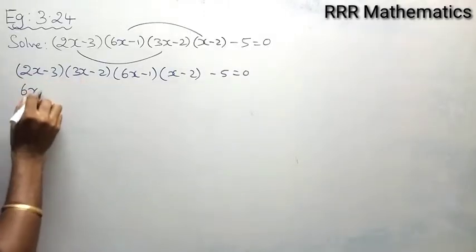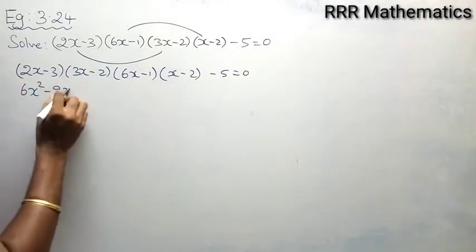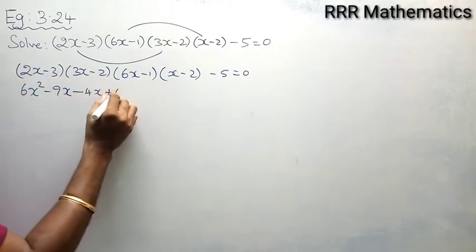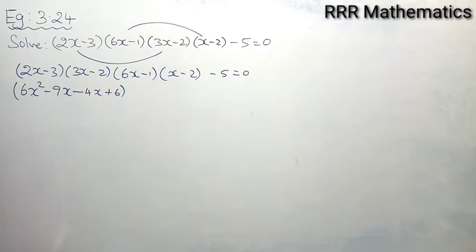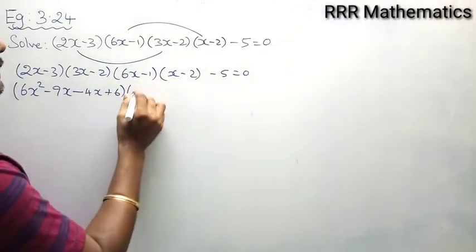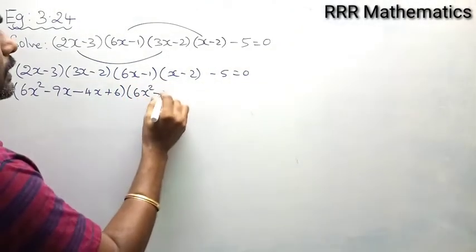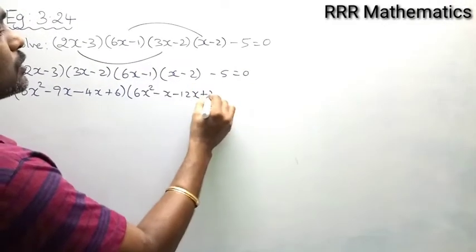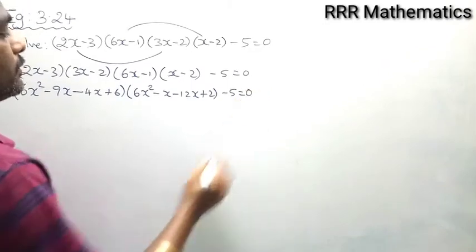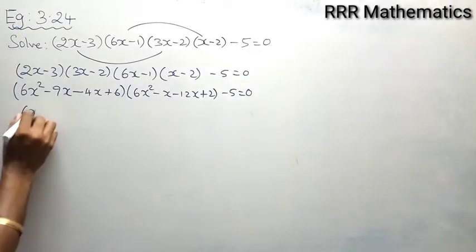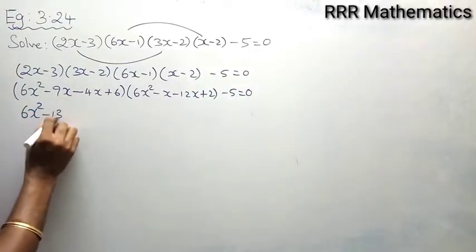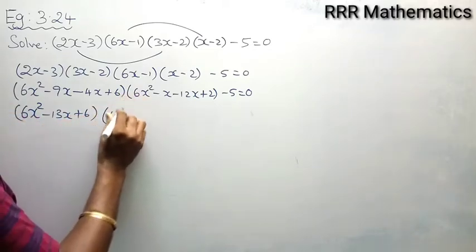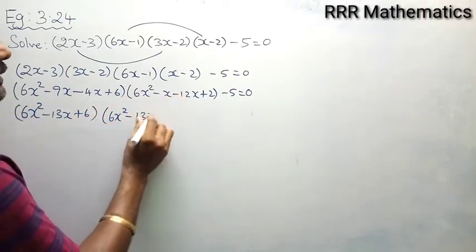When you multiply (2x-3)(3x-2): 6x² - 4x - 9x + 6 = 6x² - 13x + 6. And (6x-1)(x-2): 6x² - 12x - x + 2 = 6x² - 13x + 2. So we have (6x² - 13x + 6)(6x² - 13x + 2) - 5 = 0.